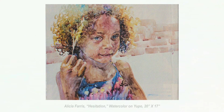Rather than using a soft nondescript background as Janet Rogers did with the roses, Alicia Ferris creates a high key suggestion of a brick wall to stabilize the portrait of this little girl. The painting is done on Yupo, a synthetic painting material that holds the pigment on the surface and gives it a very interesting surface quality. The brick wall is slightly on a tilt to keep it from becoming too static, and it does still stabilize the composition.